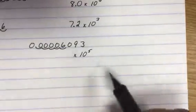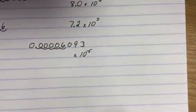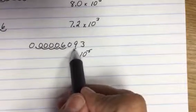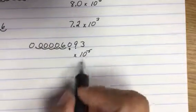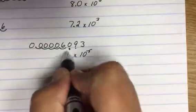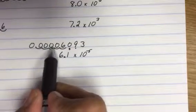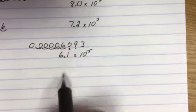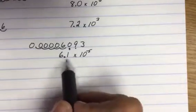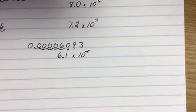I made a small number bigger. So it's a negative five. All right. This number tells me this number rounds to one. So 0.00006093 in scientific form becomes 6.1 times 10 to the negative fifth.